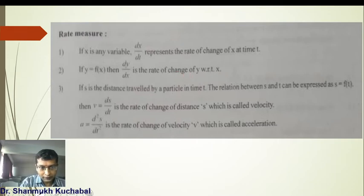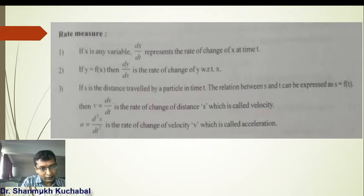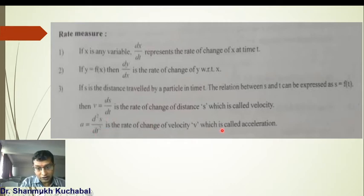Next, velocity of a particle v is ds upon dt, where s is called distance or displacement. Finding the first order differentiation of a particle, we call it velocity. If we differentiate again, we get the second order differentiation as d²s upon dt², which we call the acceleration of a particle.